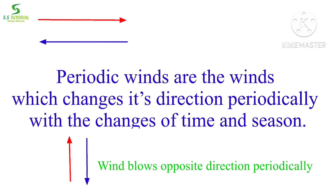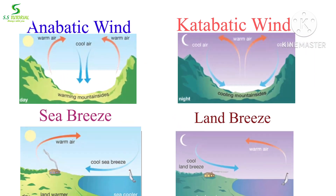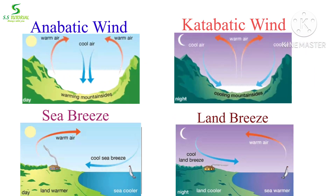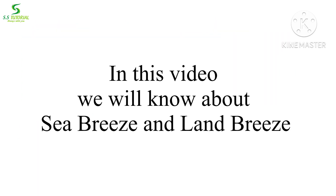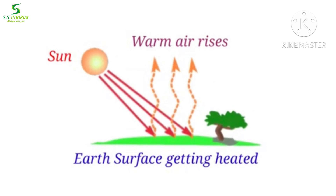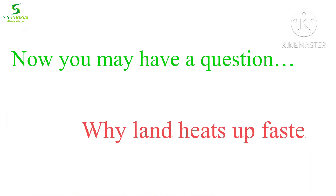Land and sea breezes are actually periodic winds. Periodic winds are winds that change their direction periodically with the change of time and season. Localized differences in pressure and temperature are the main reason for periodic winds. Land and sea breezes, katabatic and anabatic winds, and monsoon are some examples of periodic winds. In this video, we will discuss only land and sea breezes.